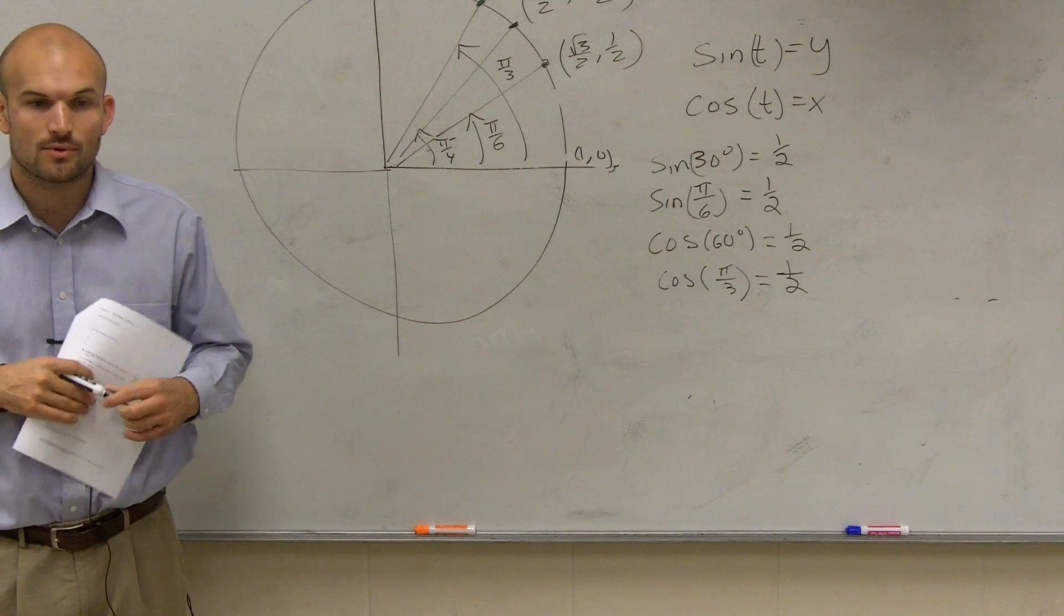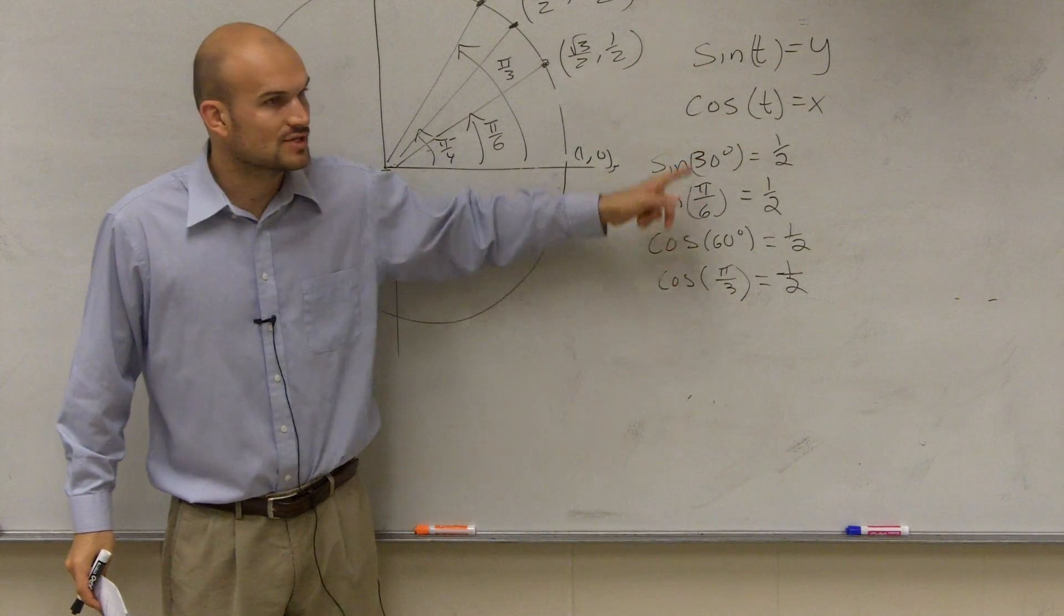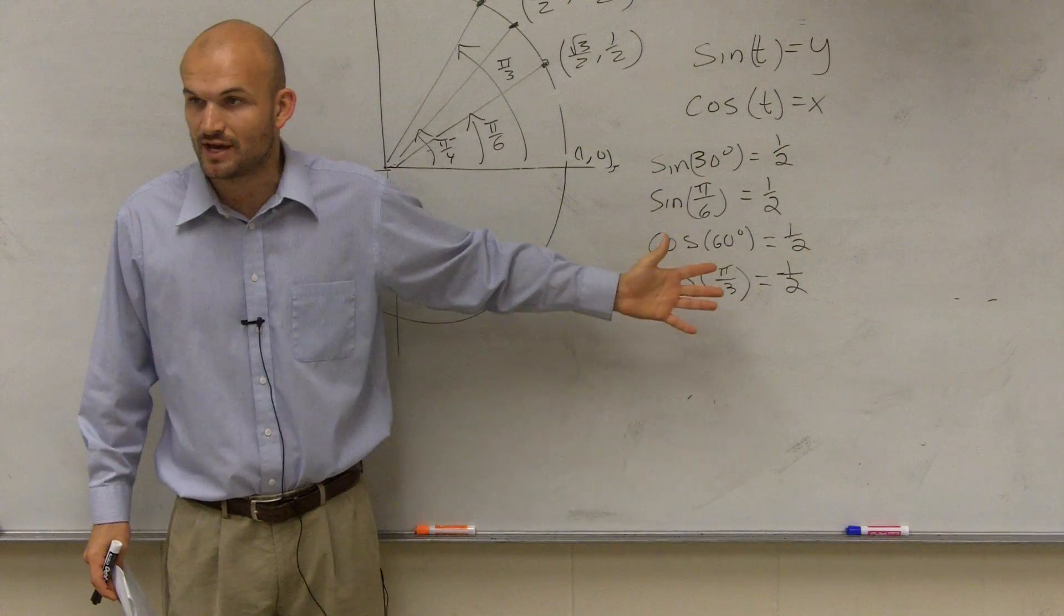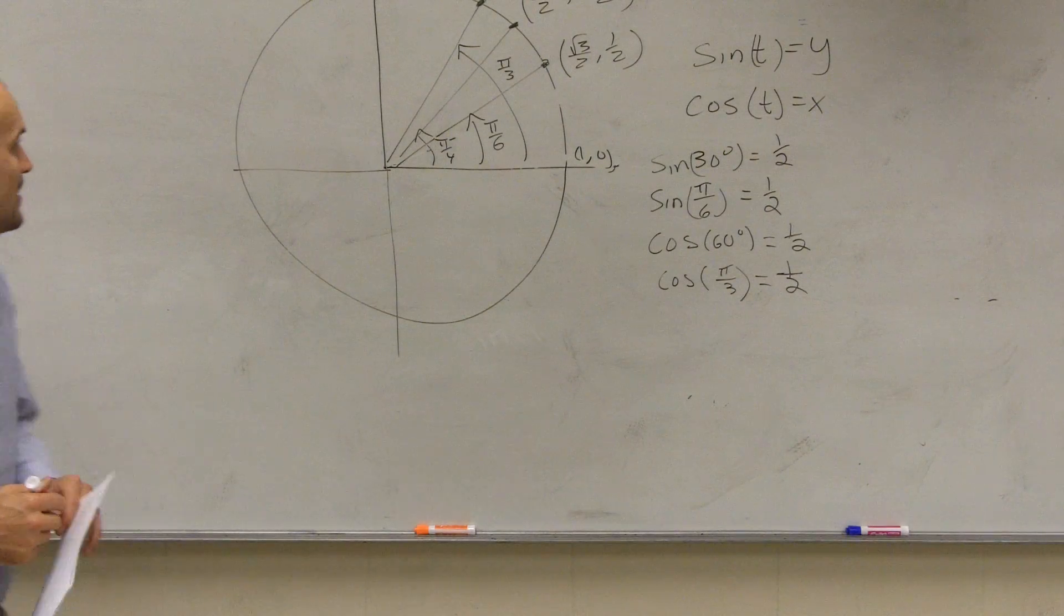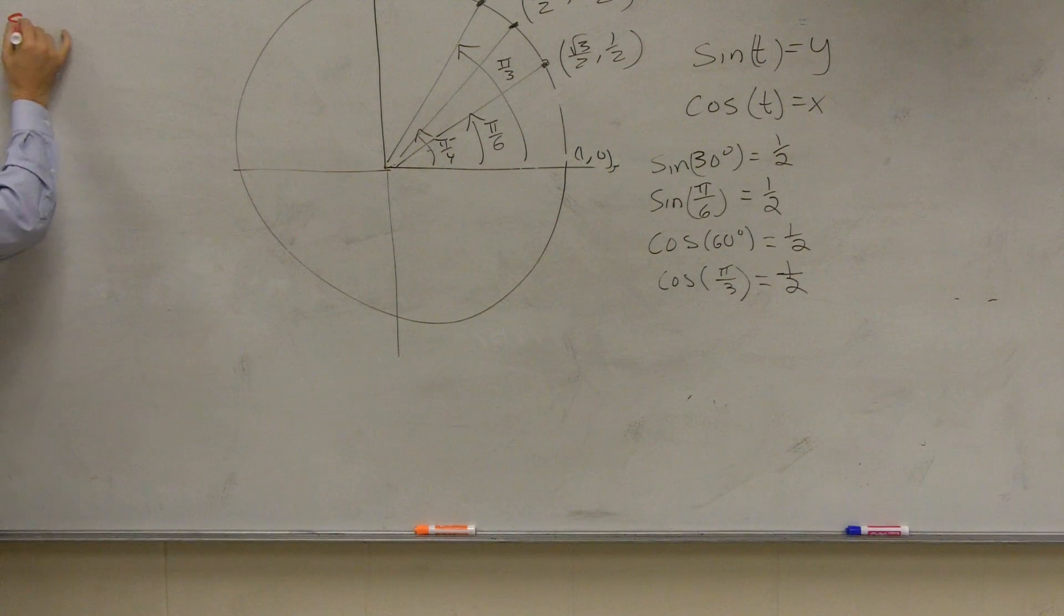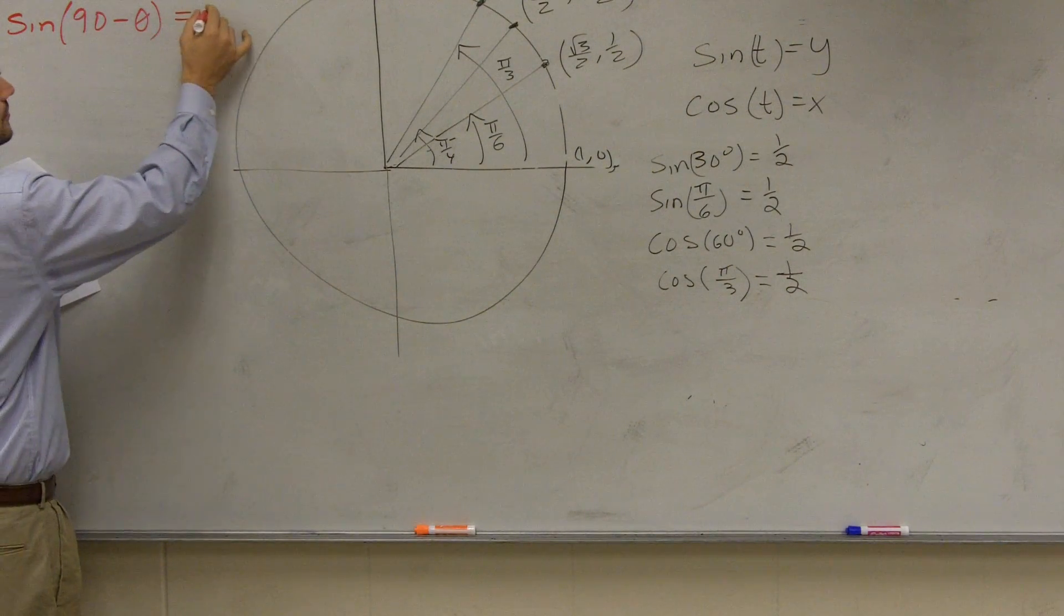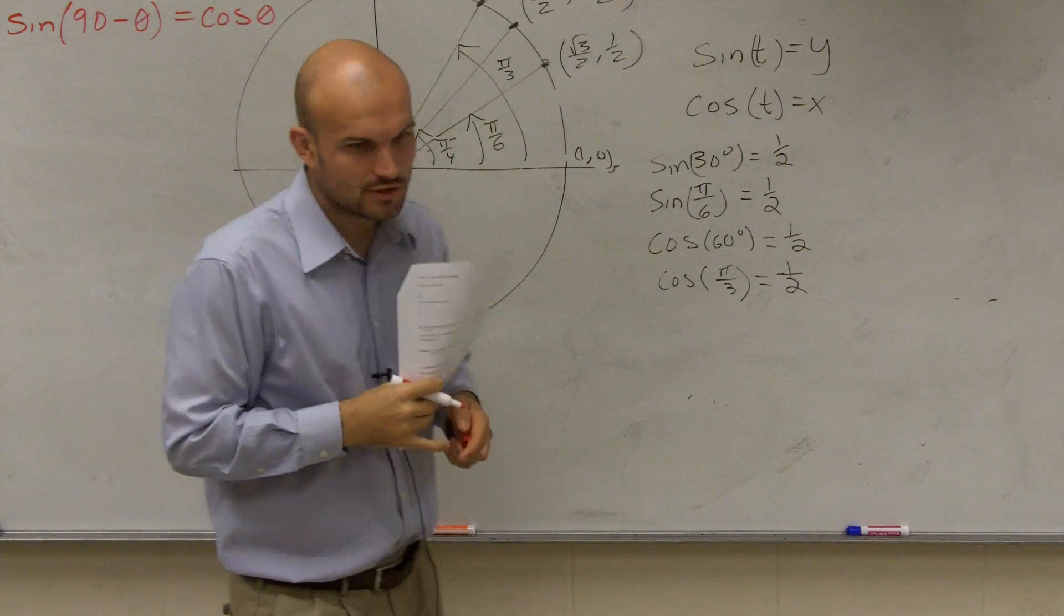So what that brings us up to is what we call our co-function identities, meaning you can have angles that are different, or you can have different angles, but if you take different functions of them, then they still can be equivalent. So what we do is we say, if I said the sine of an angle is going to be 90 degrees minus theta, whatever my angle is, that is now going to be equal to cosine.